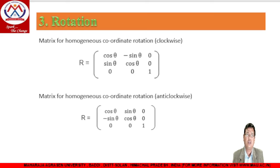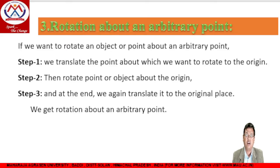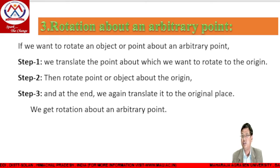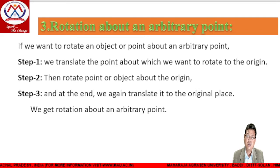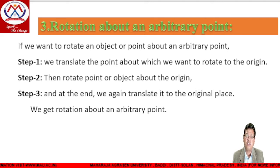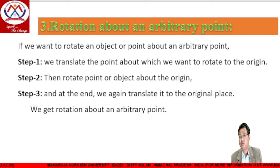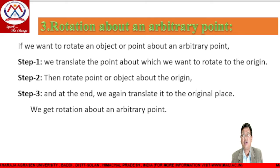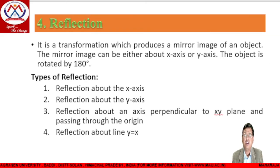We can also represent these matrices in homogeneous coordinate form for 3D representation. If we are rotating an object with respect to any arbitrary point, we must follow these steps: first, translate the object to the origin; then rotate the object with respect to the origin; then translate the object back to its original position. We must follow these steps to rotate any object with respect to any arbitrary point.